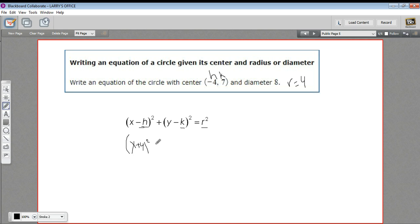And that's quantity squared. And then k is 7, so this is y minus 7, quantity squared.